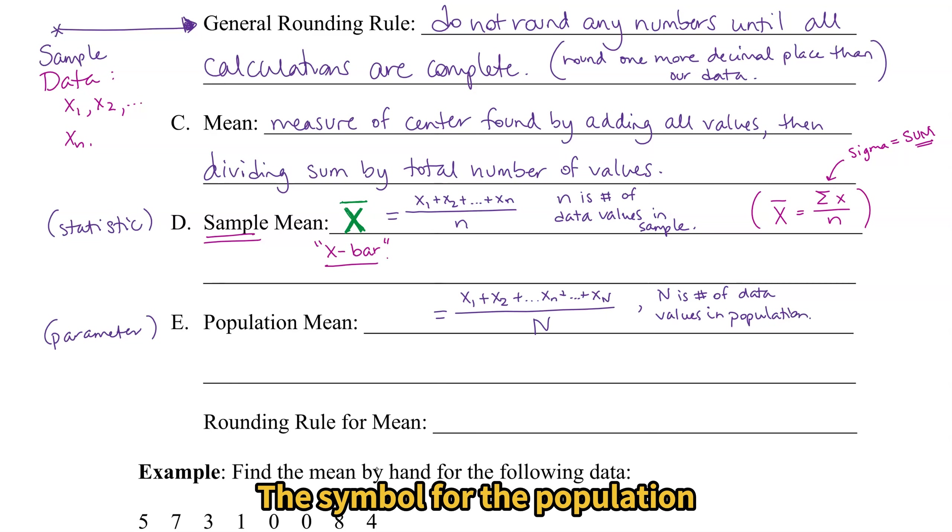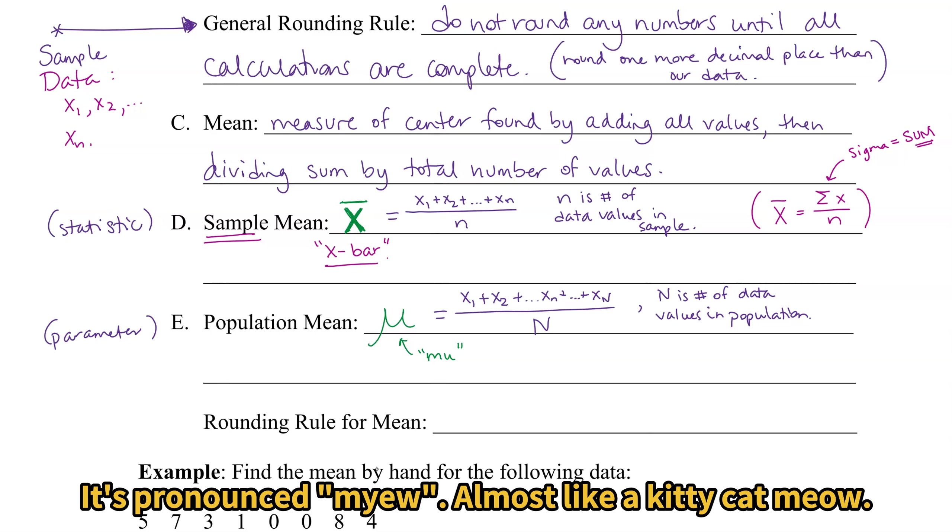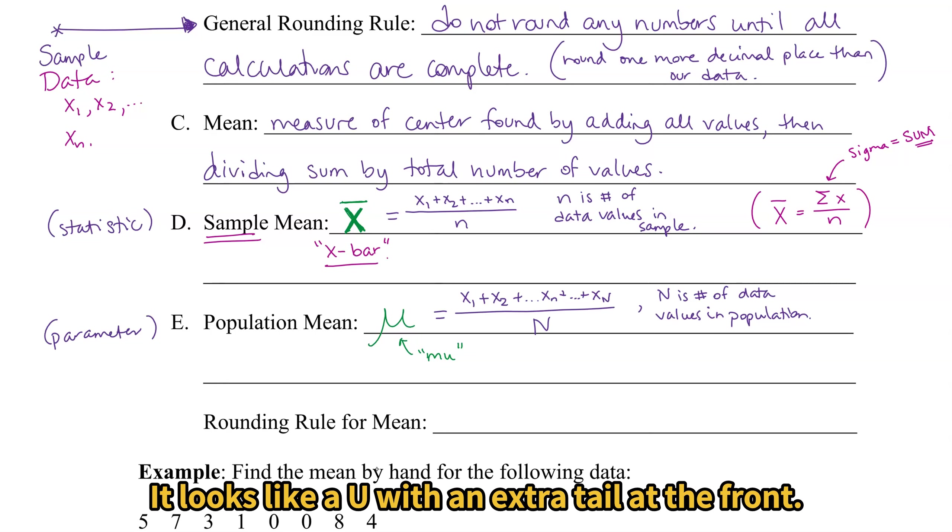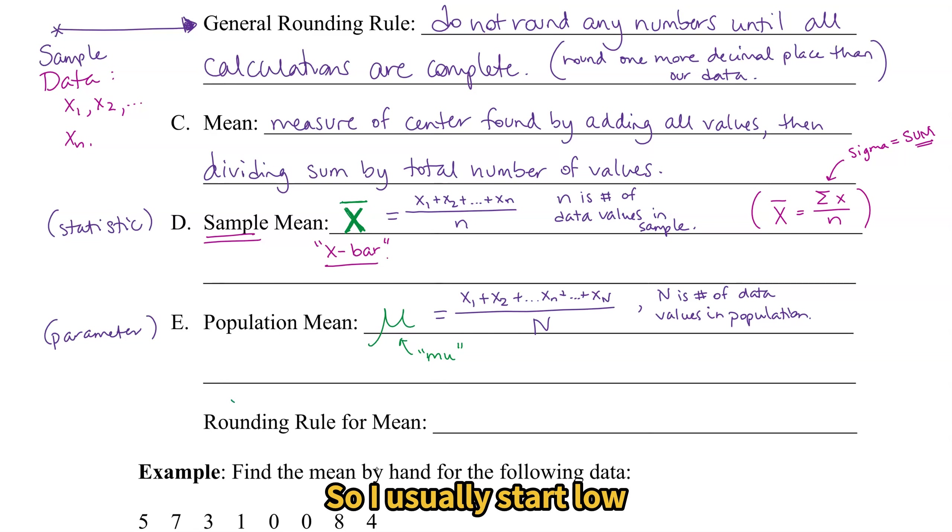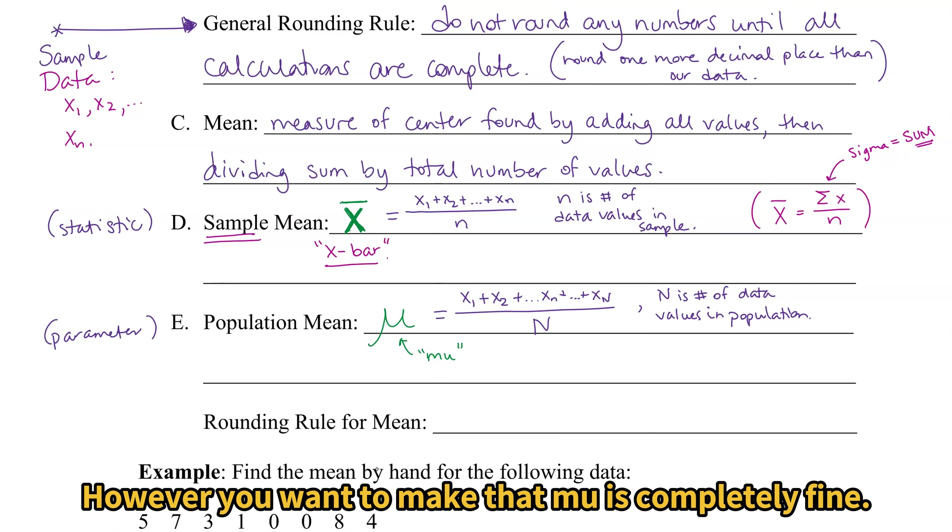This symbol for the population mean is another Greek letter. And that Greek letter is the letter mu. It's pronounced mu, almost like a kitty cat, mu. It looks like a U with an extra tail at the front. So I usually start low, go up, and curve back around. That's how I make my mu's. I've seen some students make the U and then put a tail in the front. However you want to make that mu is completely fine.